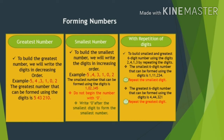Here, digits will not repeat — each digit will be used only once. Remember, to build the greatest number we will write the digits in decreasing order. Let's understand this with an example. You have to build the greatest six-digit number using six different digits: 5, 4, 3, 1, 0, and 2. To form the greatest six-digit number, arrange the given digits in decreasing order.